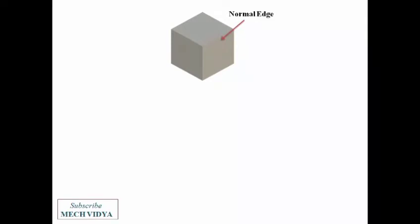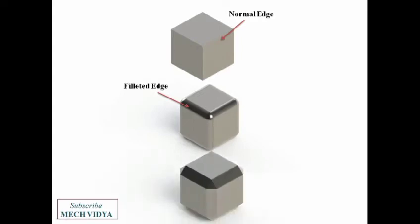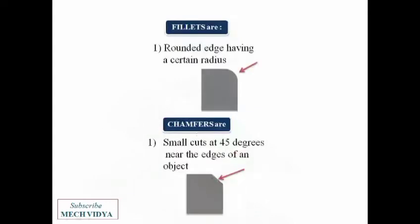Filleting is the art of rounding the sharp edges to make them smooth, whereas in chamfering we cut the edges at 45 degrees. Remember that fillets are rounded edges, whereas chamfers are straight cuts made at a 45 degree angle, and both are done only at the edges.